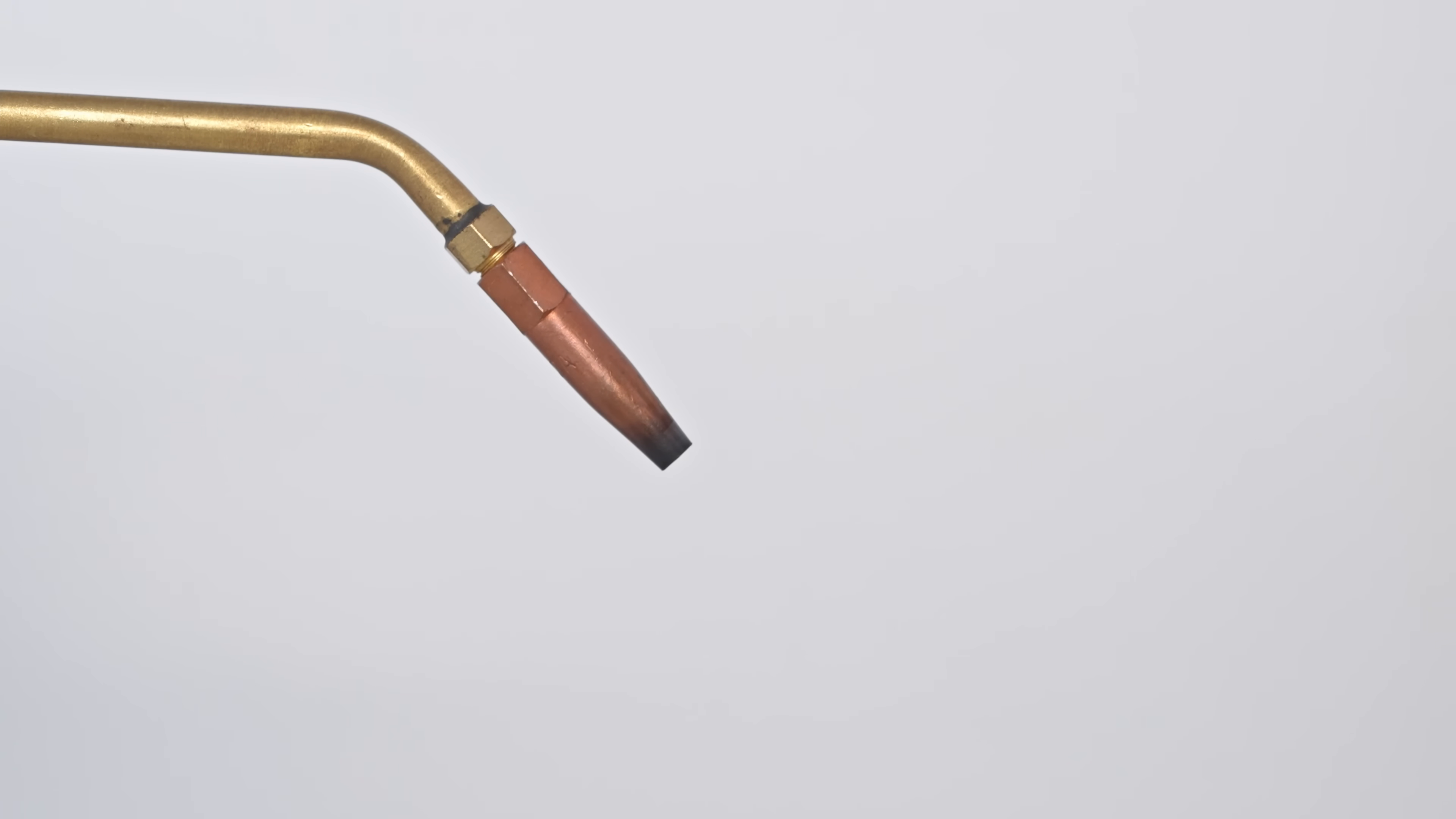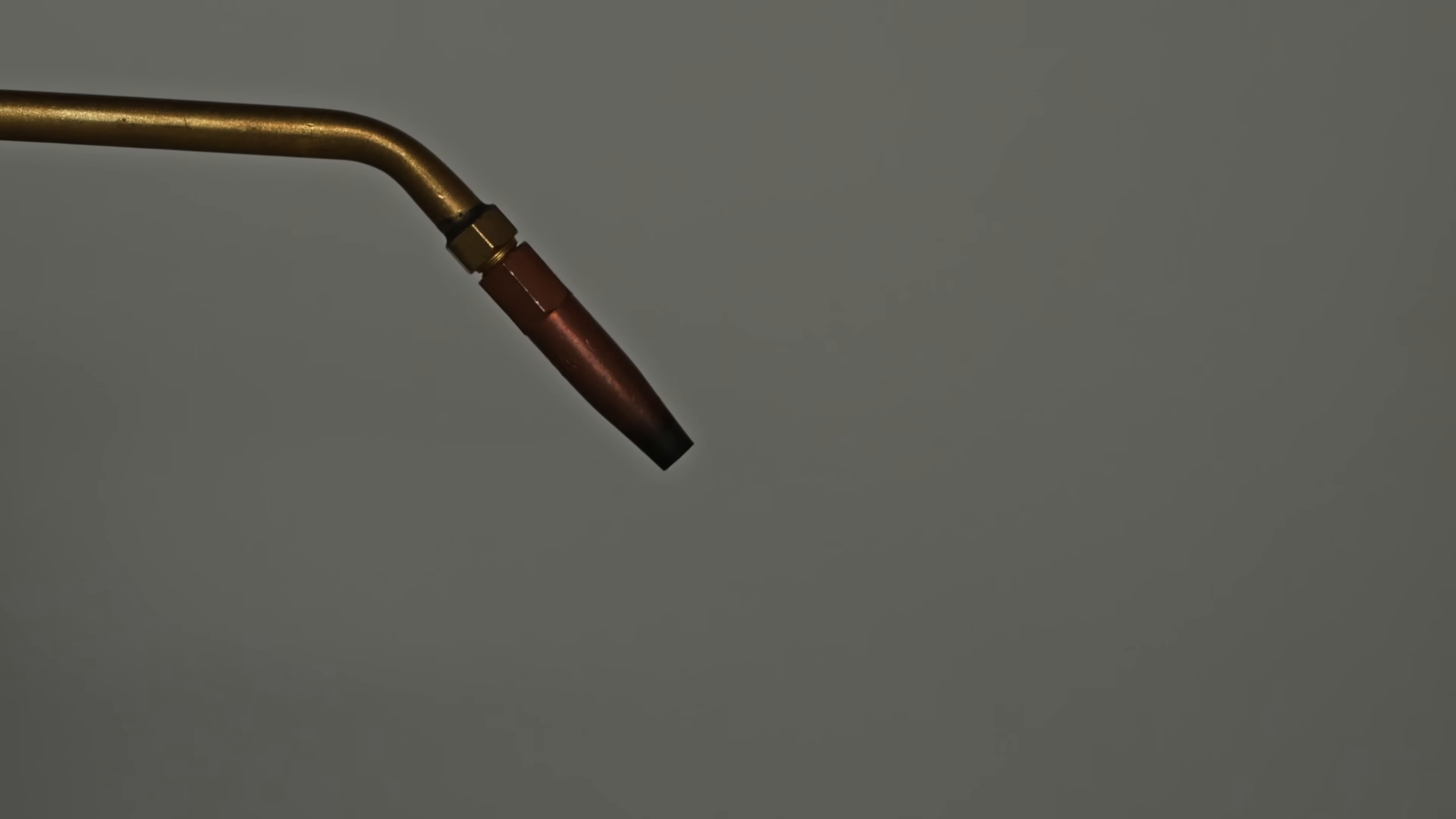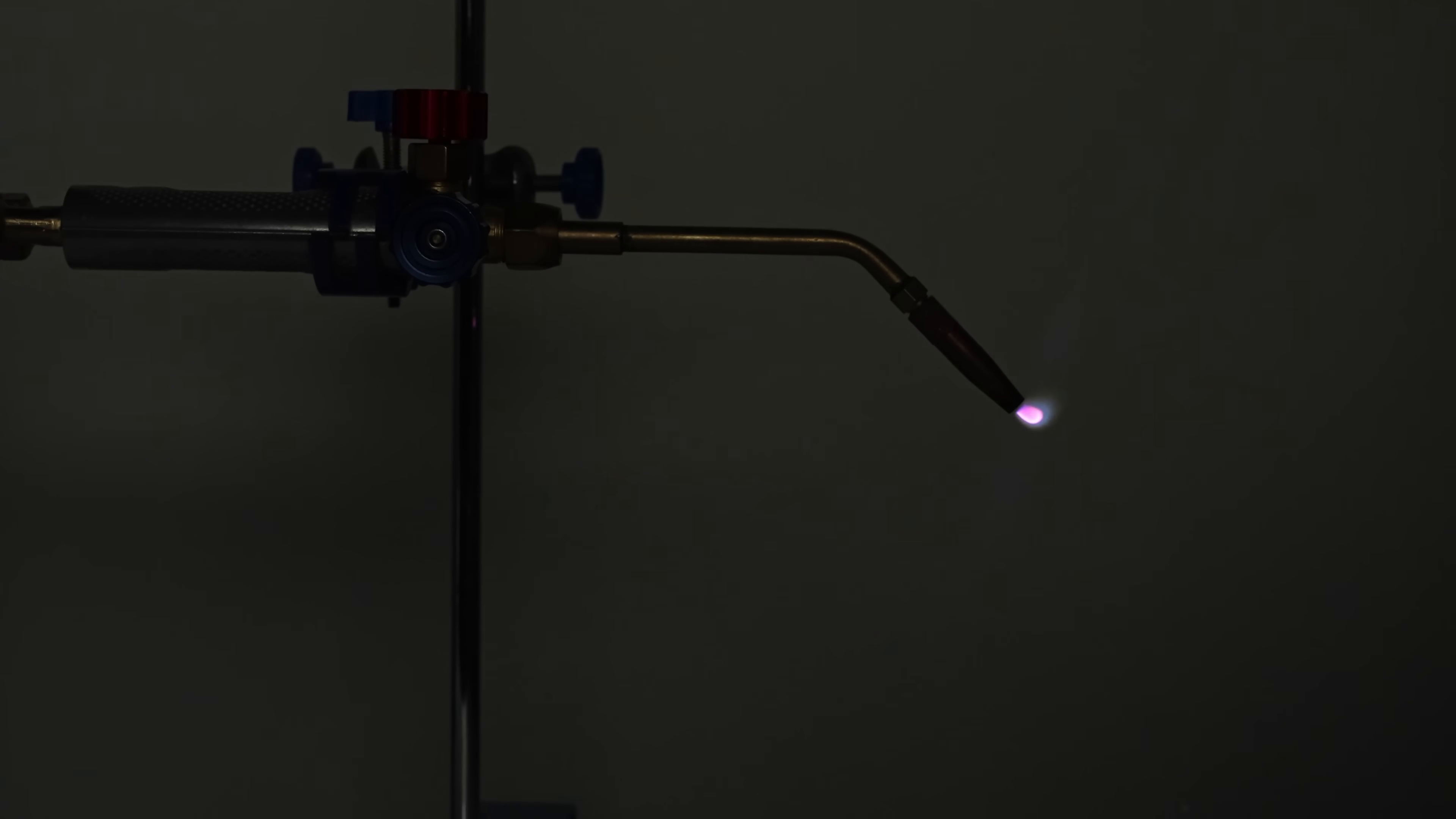Now, let's try to ignite the cyanogen. I dimmed the light so that the color of the flame of the burning gas was better visible. Yes, it worked. The cyanogen burns with a rich pink flame, but the flame is too small. To achieve more intense combustion, the intensity of the gas release needs to be increased.